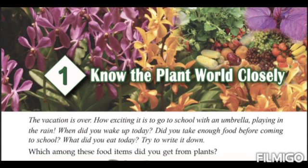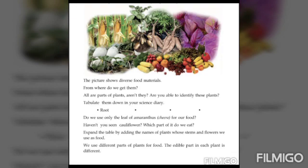Which among these food items did you get from plants? Now look at the picture. The picture shows diverse food materials. From where do we get them? All these are parts of plants. Can you identify these plants? If you can, take your science diary and note it down.